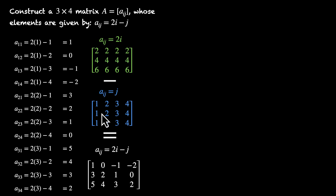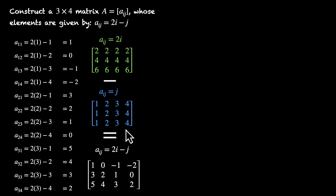Continuing: 4 minus 1, 2, 3, 4 gives 3, 2, 1, 0 — this also works. And 6 minus 1, 2, 3, 4 gives 5, 4, 3, 2. So we're doing the same calculations, but this decomposition method is cleaner.